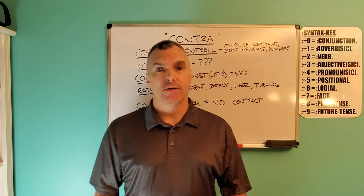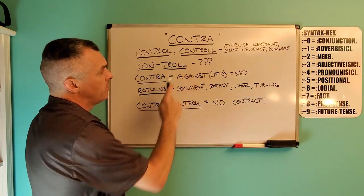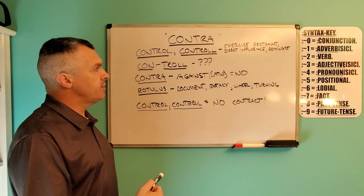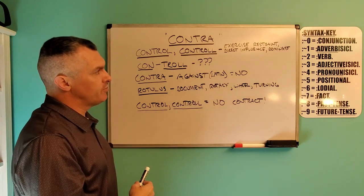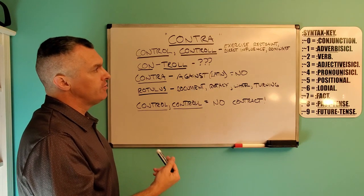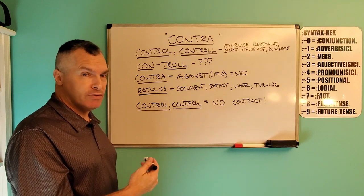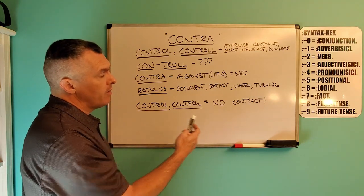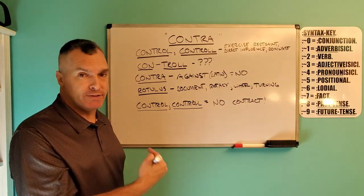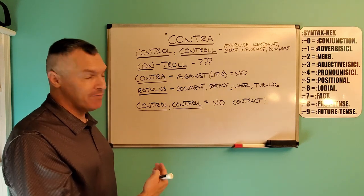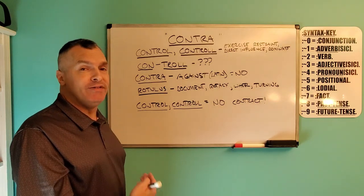What I'm going to do is first look at this word 'control' from Webster's 1828 online dictionary. I've chosen some of these definitions here — it says: exercise restraint, direct influence, dominate. Now those are all things that are contrary to my position of peace and neutrality. I don't want to restrain anyone. I don't want to influence anyone, because influence is modification — and we know what modification is. Modification is what adverbs and adjectives do. And I certainly don't want to dominate anyone.